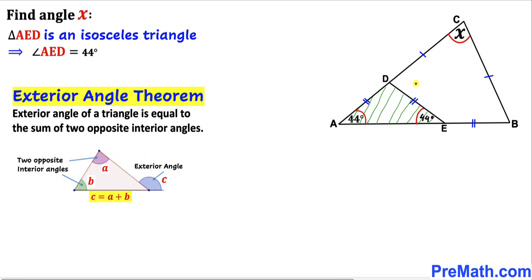Focusing on our original problem, angle EDC is going to be our exterior angle, and that is going to be the sum of the two opposite interior angles: 44 plus 44 gives us 88 degrees.